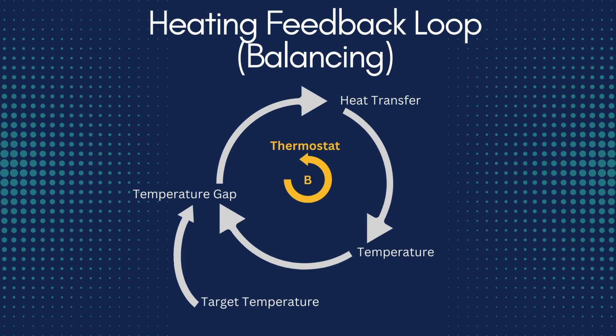This diagram represents a balancing feedback loop, often found in systems thinking to describe self-regulating processes. The loop is labelled as a balancing loop, also described as a negative or goal-seeking loop. The thermostat is the controlling device that monitors and regulates the temperature. The temperature gap is the difference between the current temperature and the target temperature. When the current temperature deviates from the target, the thermostat responds by generating heat to reduce this gap. As heat is introduced, the temperature rises toward the target until it matches, at which point the thermostat stops the heating process to maintain the desired state.